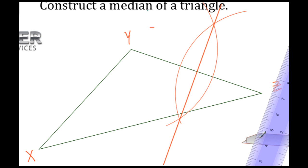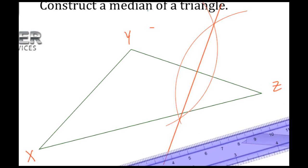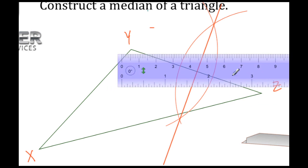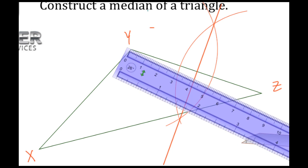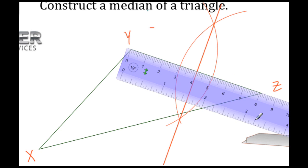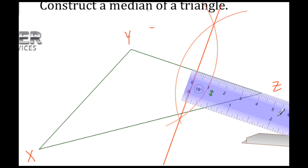All right, now YZ has been bisected. Let's do a quick measurement to make sure that's correct. We're going to place zero here at vertex Y and measure. We see this is approximately 4.1. Then we're going to measure from this midpoint here to Z.